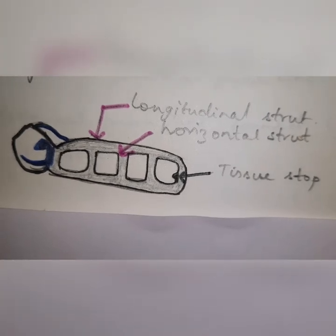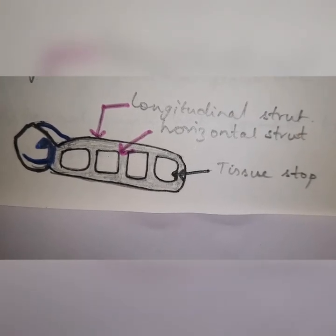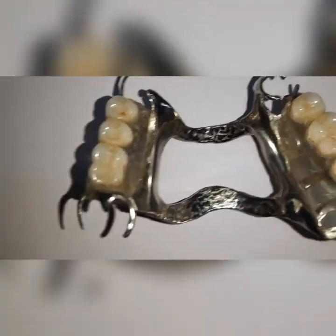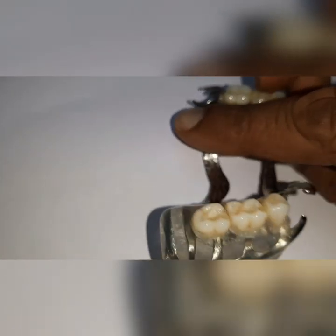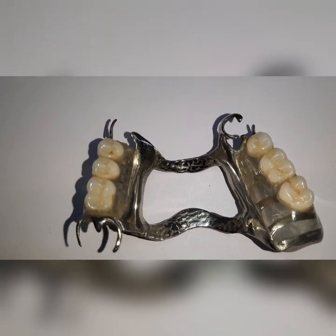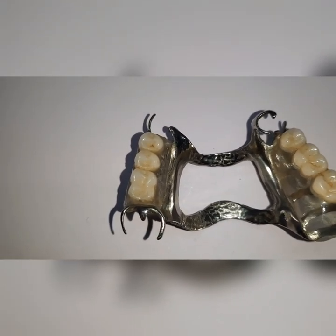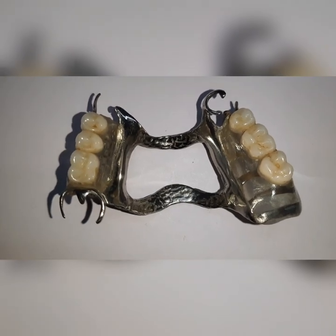In the lower arch, one strut is placed buccally while the other strut is placed lingual to it. In the upper arch, one strut is placed buccally to the crest while the other forms the border of the major connector. In this cast partial denture, you can also see a lattice type of design. The horizontal struts are 16 gauge in thickness and are placed between the struts. One cross strut is placed for each tooth to be replaced, and this design is used when multiple teeth are to be replaced, especially in distal extension cases.